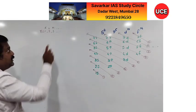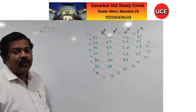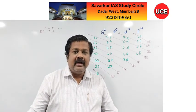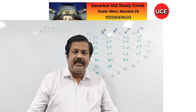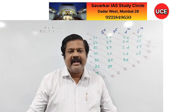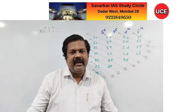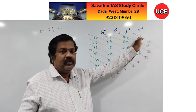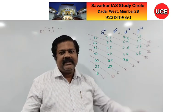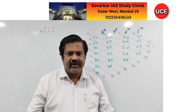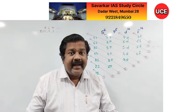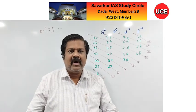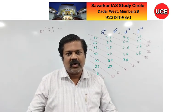The principal quantum number takes all integer values starting from 1, 2, 3, 4, and so on. Theoretically, infinite shells are there, but practically we discuss only up to the 7th shell for the existing number of electrons.